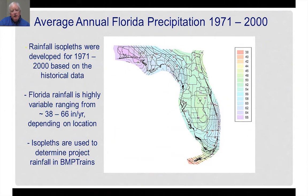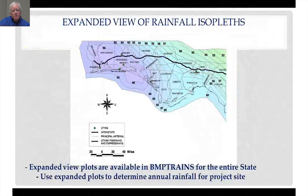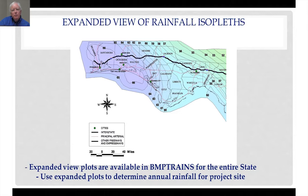Rainfall is highly variable in the State of Florida, ranging from a high of about 66 inches in western portions of the Panhandle to as low as 38 inches in Key West. The isopleths shown on this map are used in the BMP Trains model. The BMP Trains model includes expanded views of the rainfall isopleths so you can look at a specific project and determine the appropriate rainfall for that particular area.